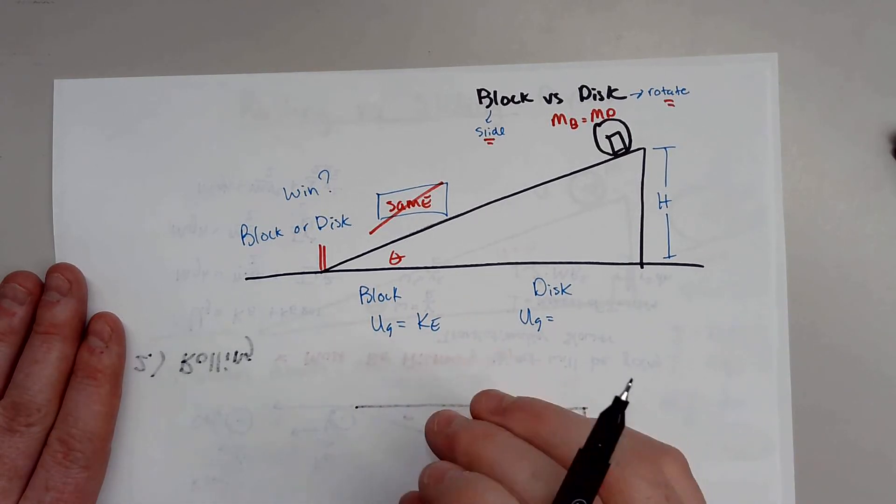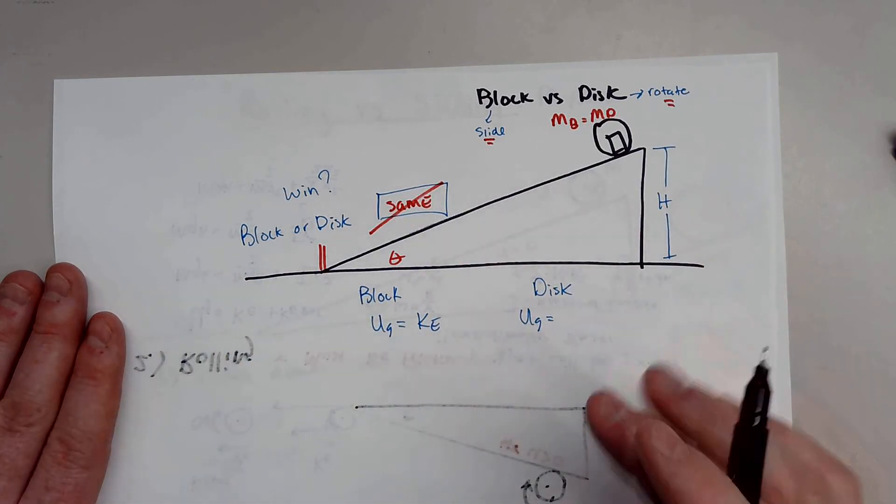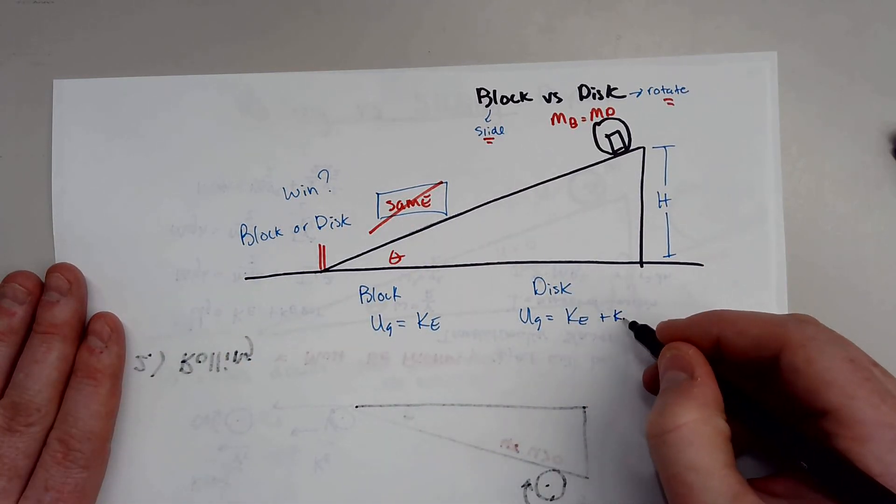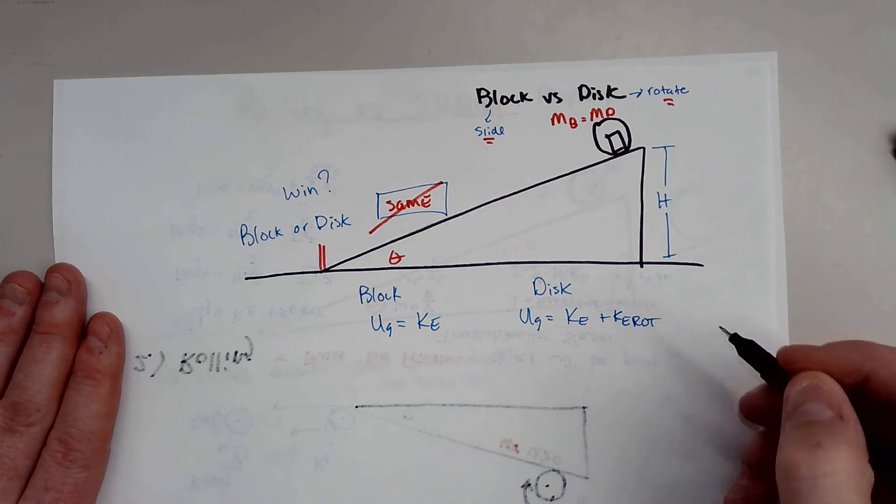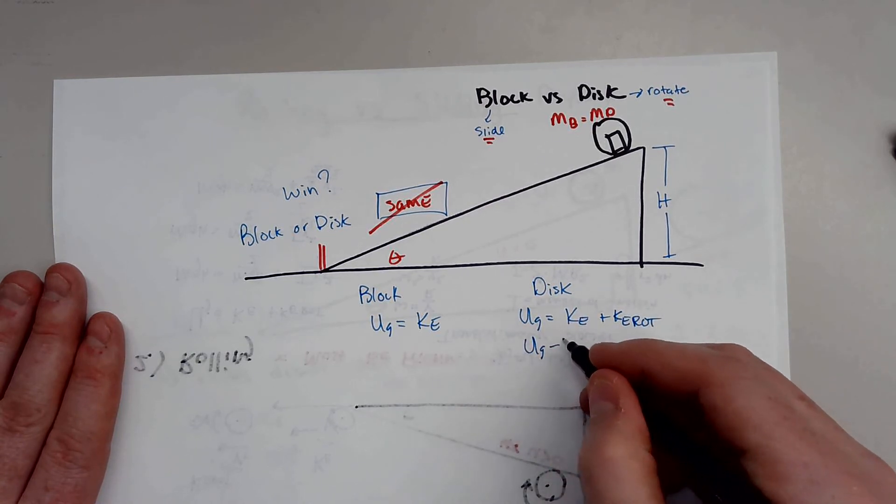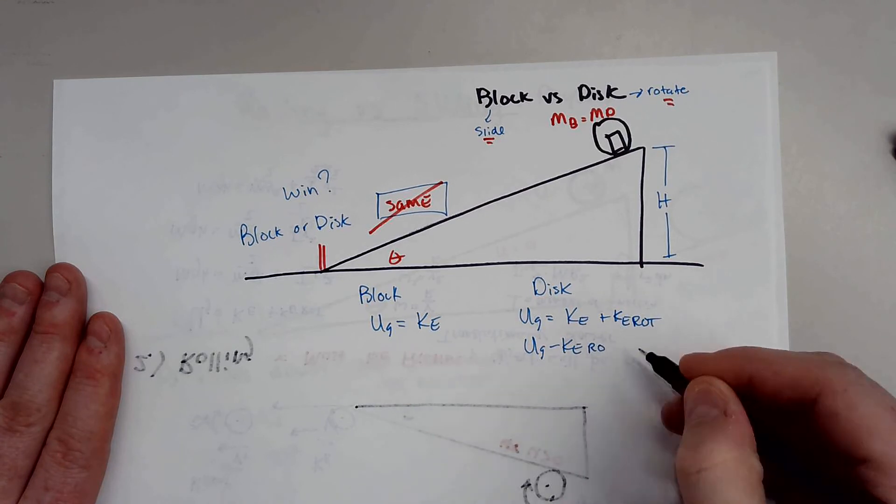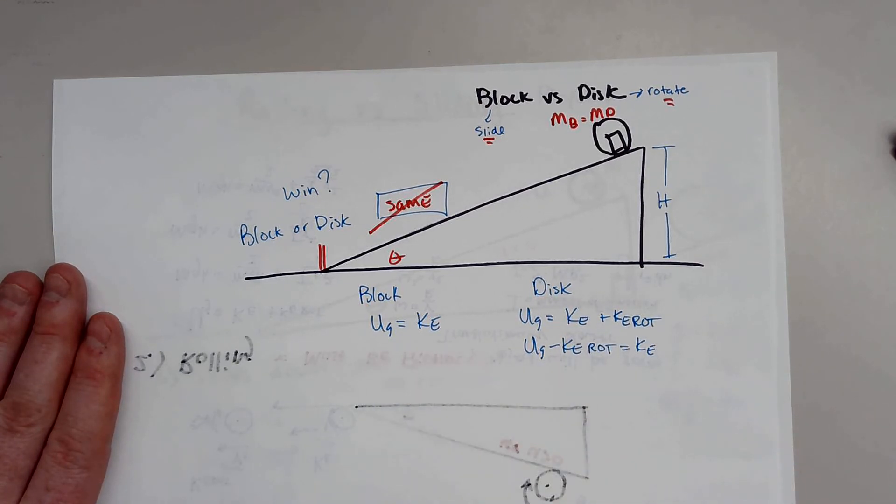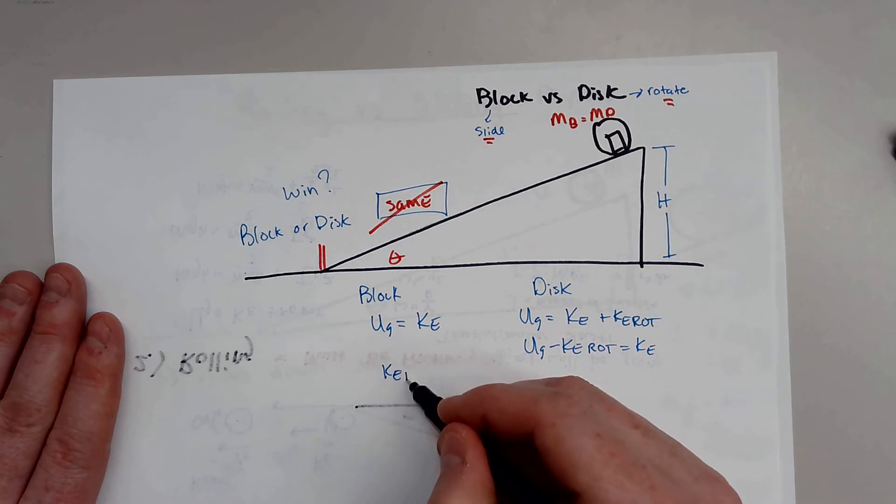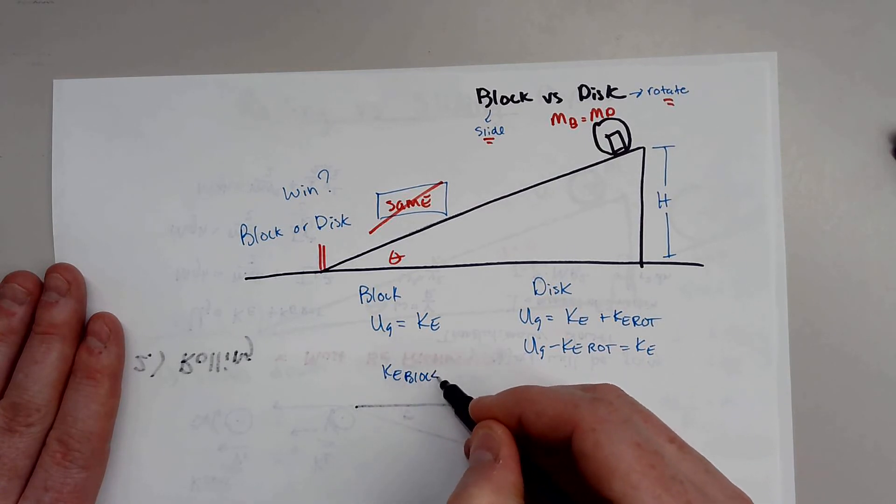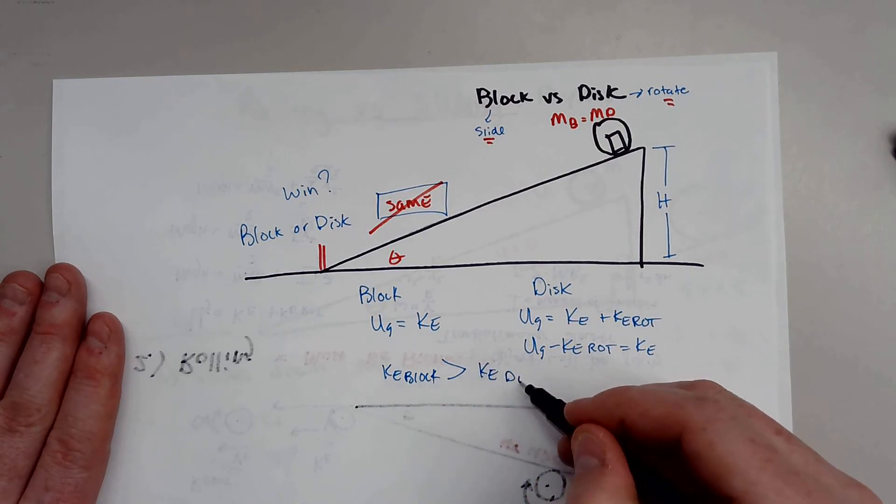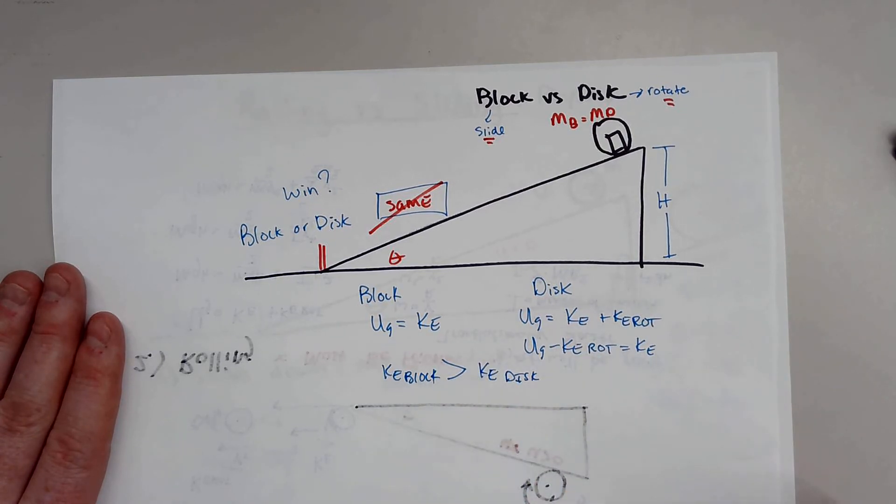So the total energy must be the same. But it's losing energy to rotation. So, for example, solving for this, you can see here that the kinetic energy will be less than the kinetic energy of the block. So the kinetic energy of the block is actually greater than the kinetic energy of the disk. Because the disk is rotating.